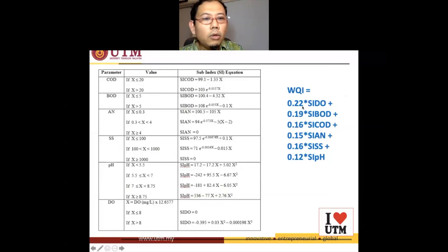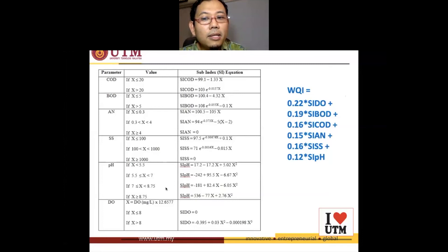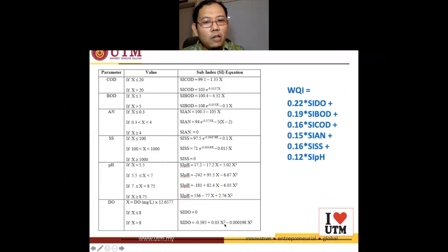So what you need to do — you look at the equation. The DO is 7 mg per liter, and 7 times 12.6577 gives approximately 84. Is 84 smaller than 8? No — 84 is greater than 8, so the sub-index of DO uses this formula: a constant plus 0.03 times 84 squared, minus a coefficient times 84 cubed. And that is the sub-index for DO.